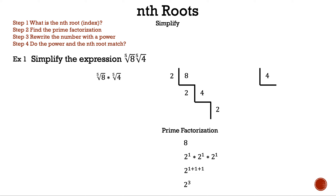Now let's find the prime factorization of four. Since four is even, divide four by two, which is two. Since two is a prime number, we can stop. The prime factorization of four is two times two, and adding those exponents gives us two squared.